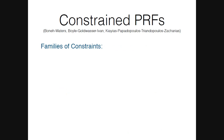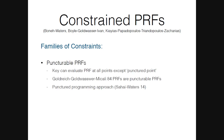We have constructions for different constrained families. The most basic family is called puncturable PRFs, where the key can evaluate the PRF at all points except the punctured points — that key can evaluate the PRF at all inputs not equal to the punctured point. The GGM84 PRF construction already gives us puncturable PRFs from one-way functions. These have been really useful in the context of indistinguishability obfuscation because of the punctured programming approach introduced by Sahai and Waters.